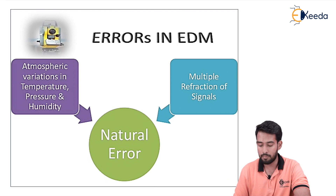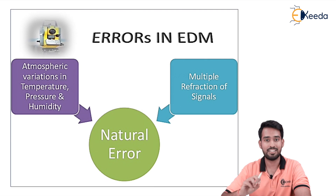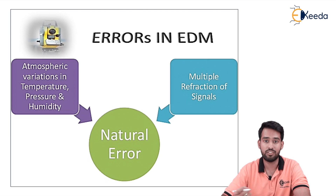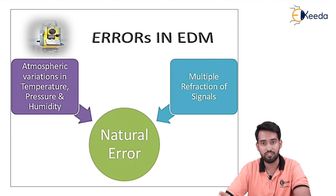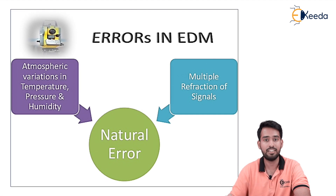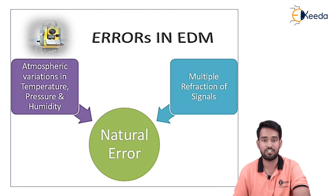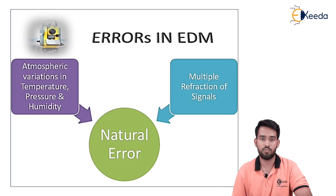Another natural error is multi-reflection of signals — signals getting reflected to different objects or in different directions, resulting in receiving lesser or lower frequency signals, which causes an error in accurate measurement. So, there are three types of errors in EDM: personal, instrumental, and natural errors.